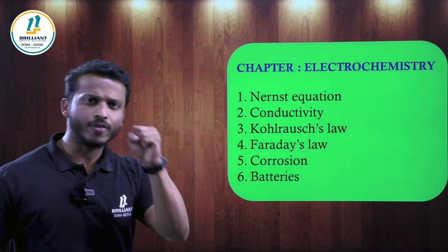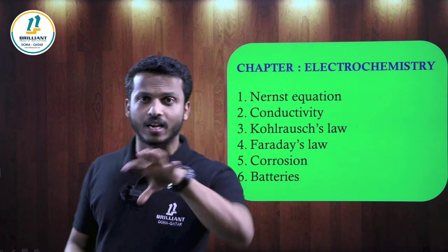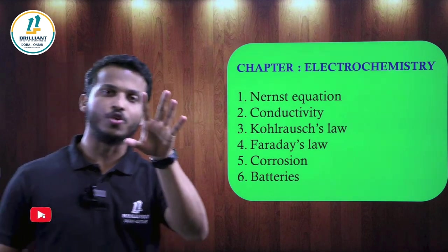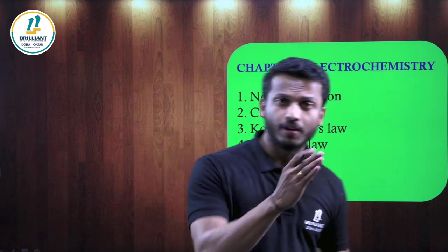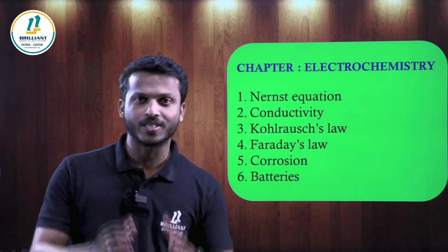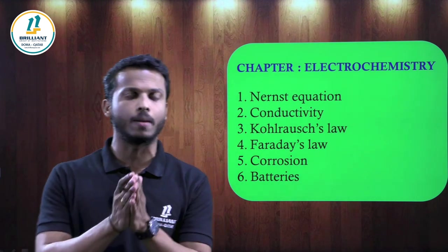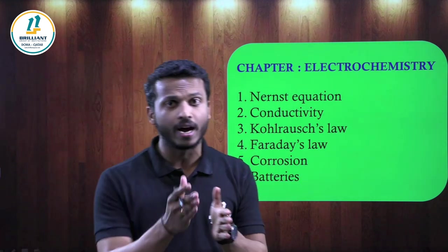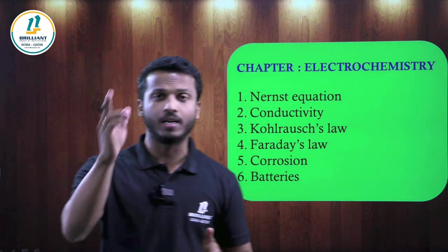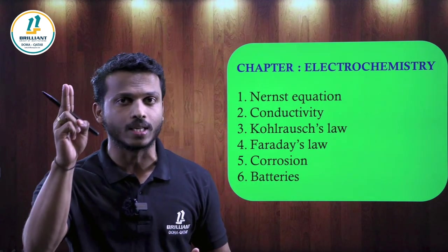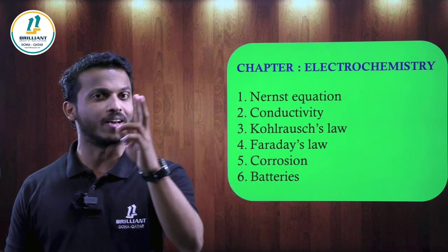The first concept is the Nernst equation — the E-cell and E-naught-cell connected equation. Numericals will also be from the conductivity part: conductance, conductivity, resistance, resistivity, cell constant — that area is very important for numerical questions. Molar conductivity (λm) and limiting molar conductivity (λm°) are important. Please concentrate on two concepts: Kohlrausch's law and the Debye-Hückel-Onsager equation.